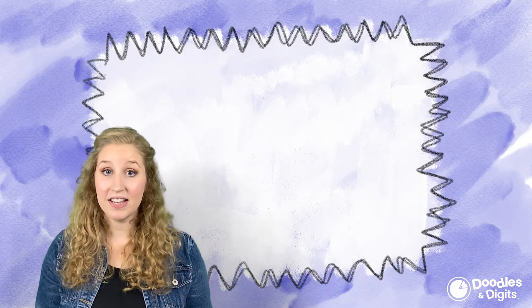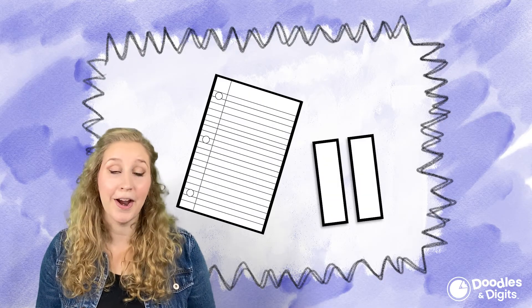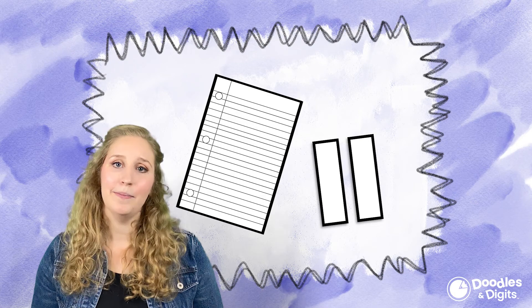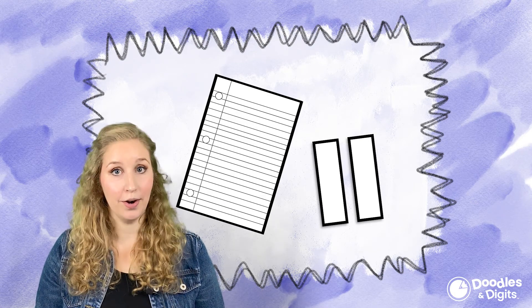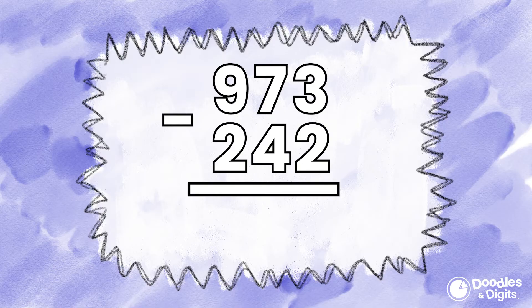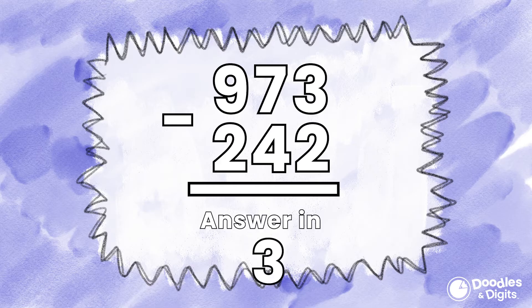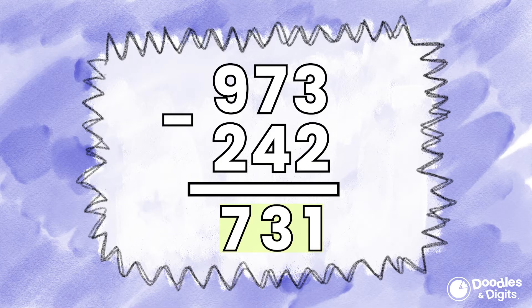Now that we've done a couple together, let's see if you can do a couple subtraction problems on your own. Remember, you can pause this video, use scrap paper, and take your time. It's really important you line it up correctly, show your thinking, and check your work. 973 minus 242 — the answer is 731.